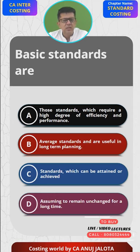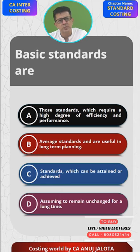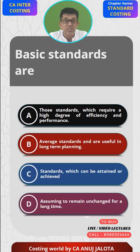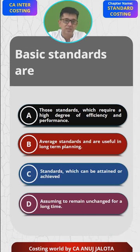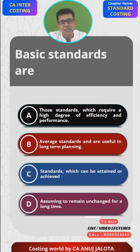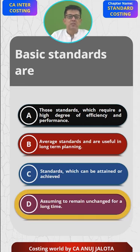Basic standards are set where conditions are not expected to change — these are long-term standards. Option C — standards which can be attained or achieved — these are called attainable standards or expected standards, so C cannot be the answer either. Option D — assuming to remain unchanged for a long time — that is exactly what basic standards define. D is the correct answer. Thank you.